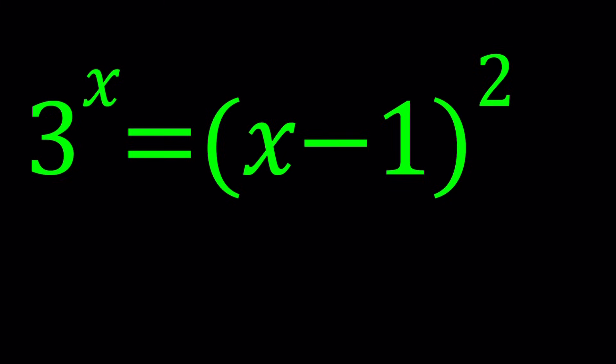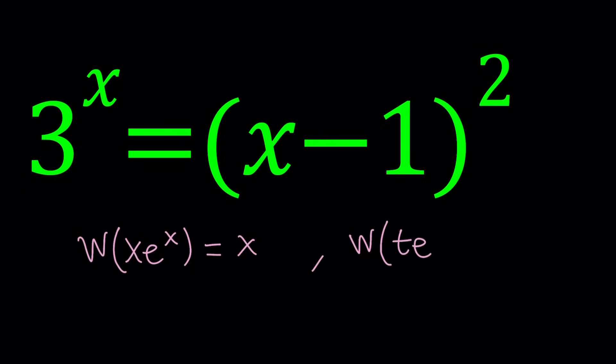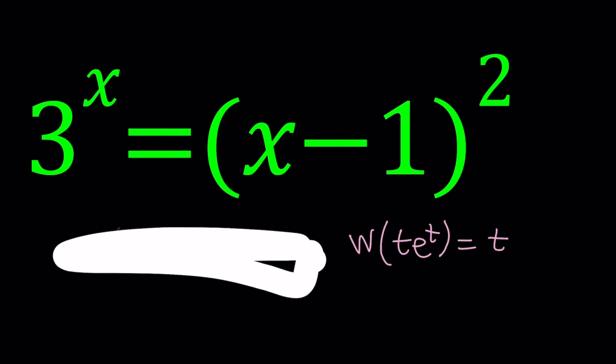I'd like to use Lambert's W function. Quick definition: it's the inverse function for x times e to the x, such that if your input is t·e^t then your output will be t. The reason I use t is because a lot of times our equations are given in terms of x and we have to use substitution.